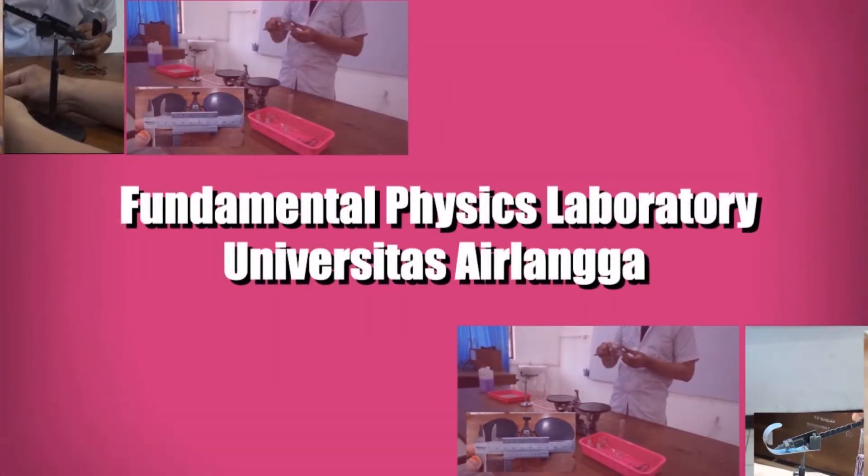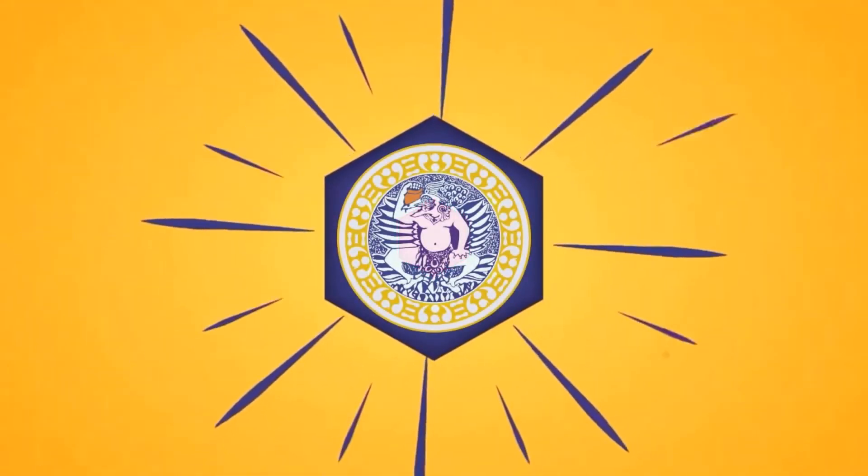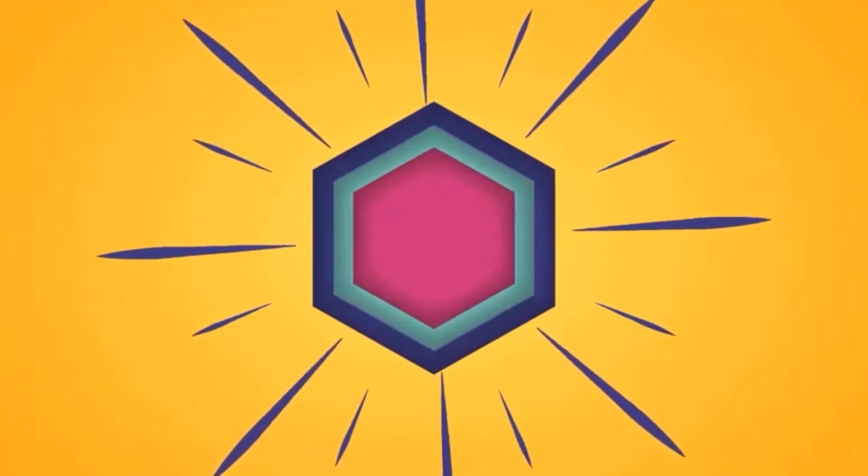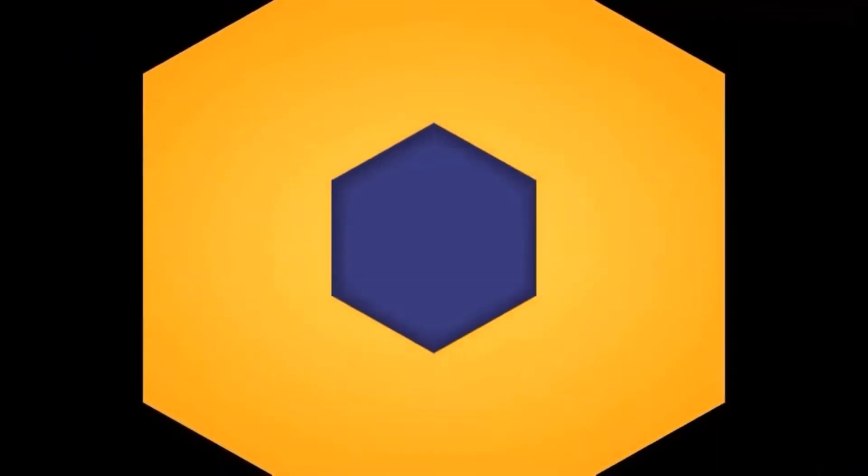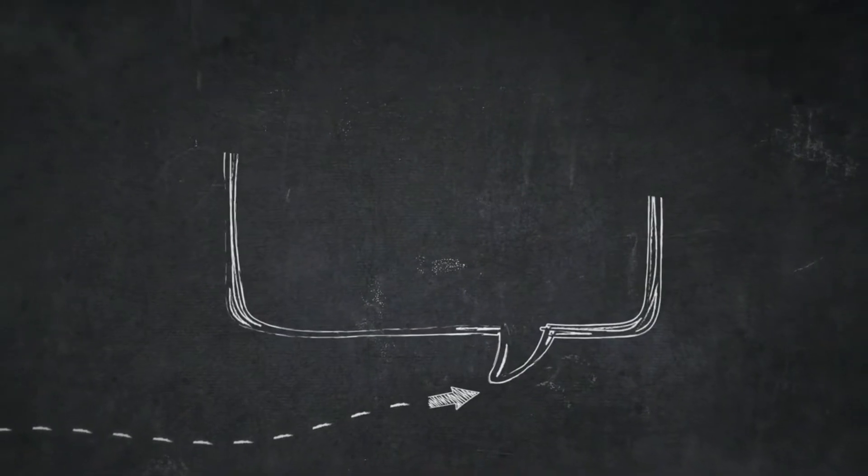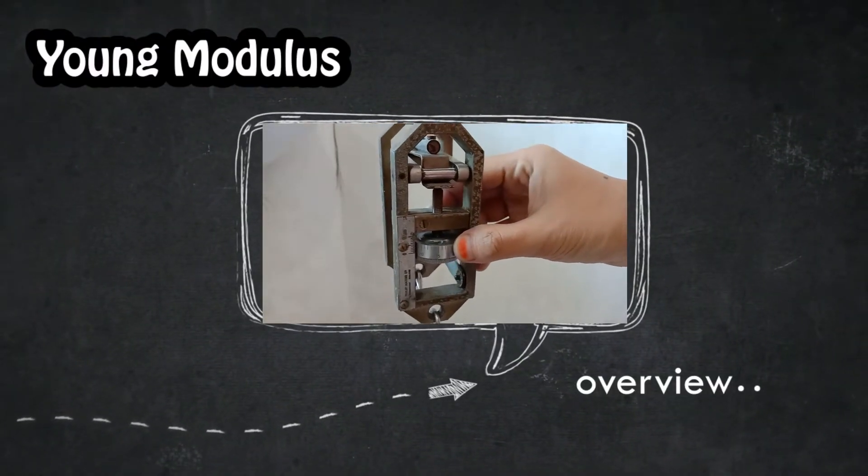Hello everybody, welcome again with our virtual fundamental physics laboratory, physics department, faculty of science and technology, Erlangga University. This is the fifth experiment and it is about Yang Modulus, which is dealing with the ratio of stress and strains of the object after we apply the force on it.